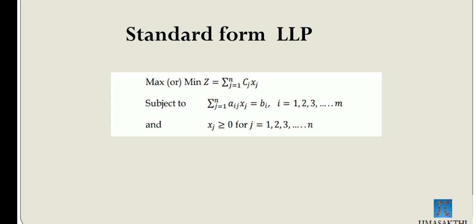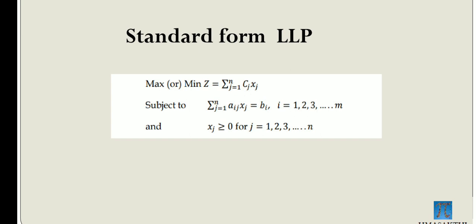In the first class, Z equals sigma, j equals 1 to n, Cj times Xj, with constraints and subject variables. We will see all the equations.